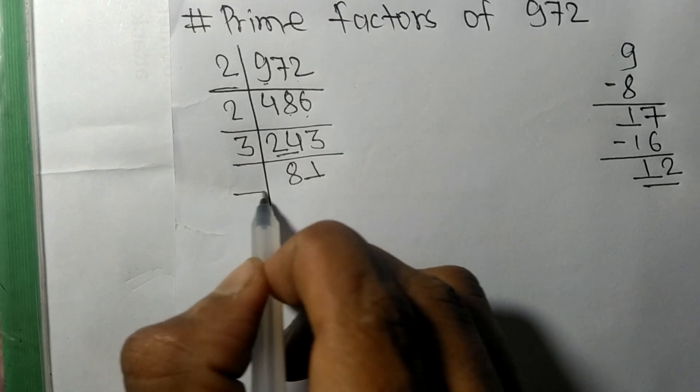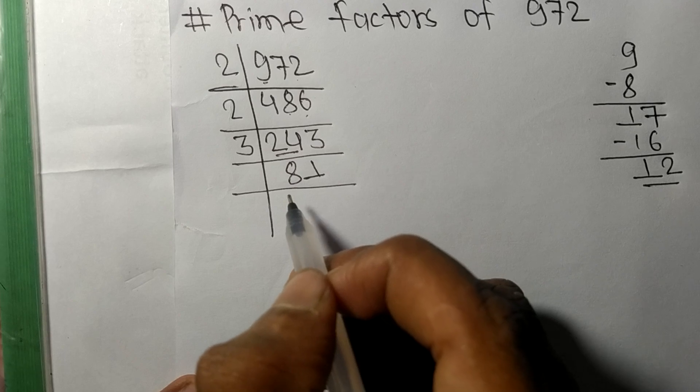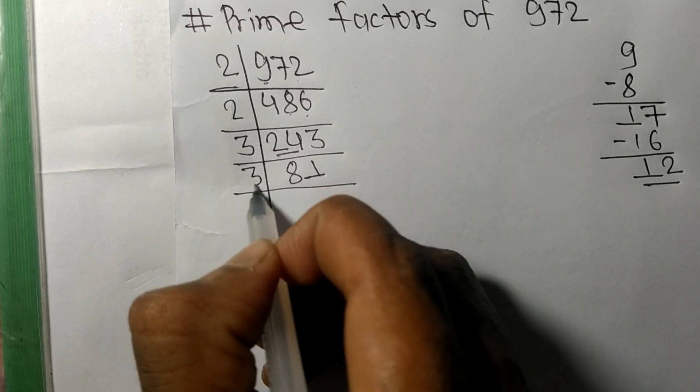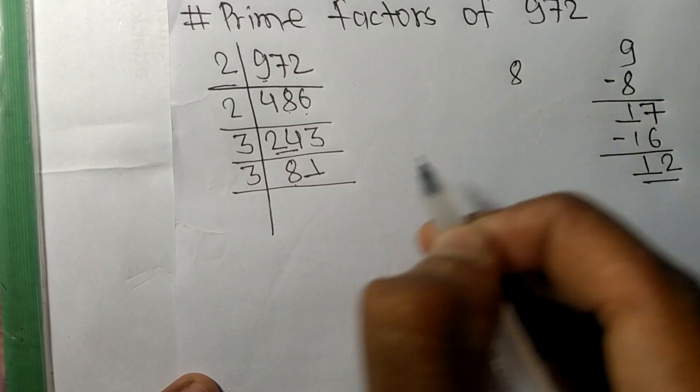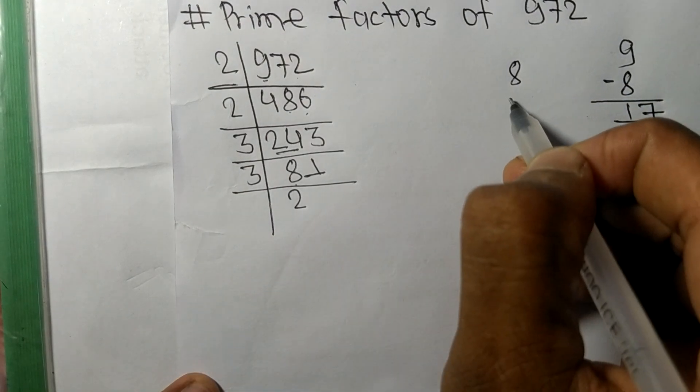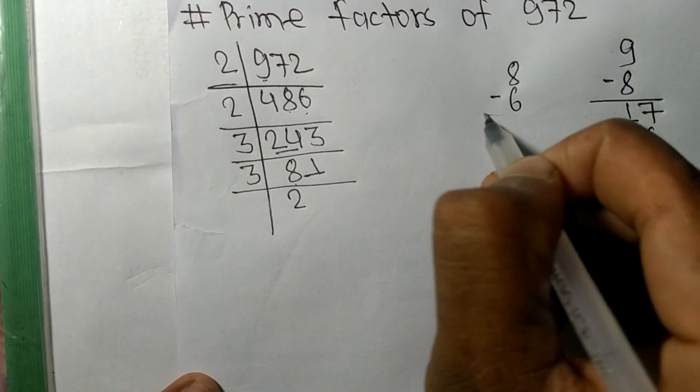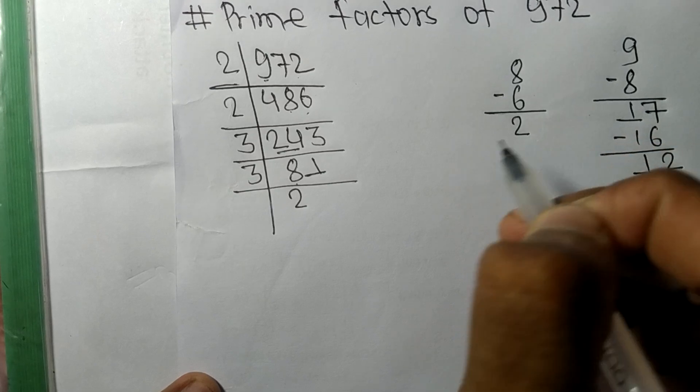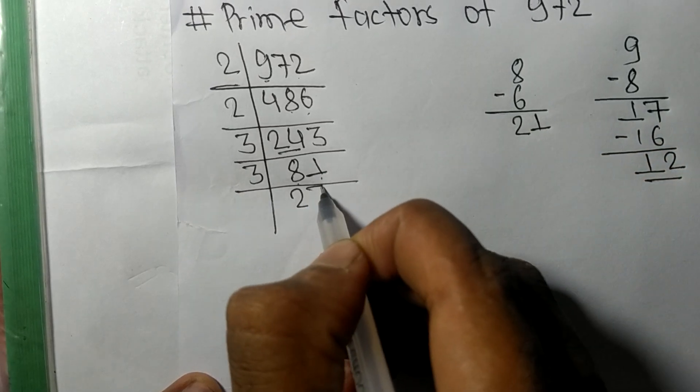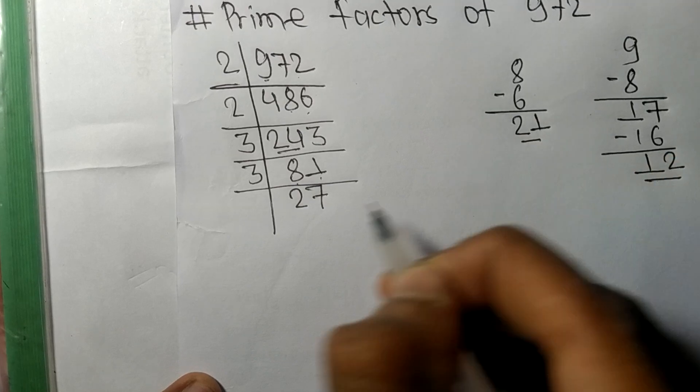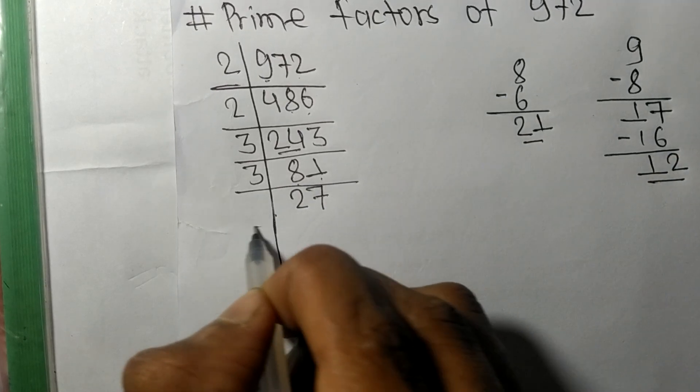Now we got 81 which is exactly divisible by 3. So first we have 8, so 3 times 2 means 6, on subtracting we get 2, this one 21, 3 times 7 means 21. So now we got 27 which is exactly divisible by 3.